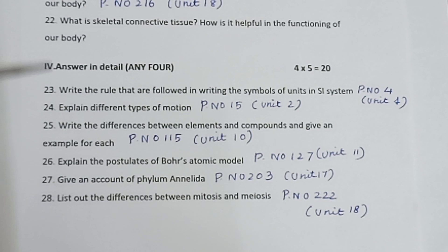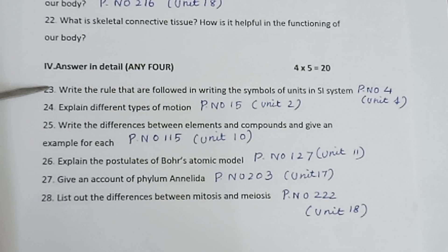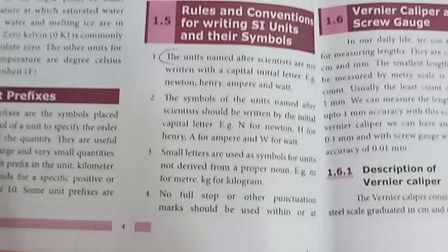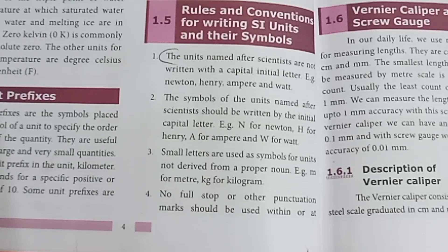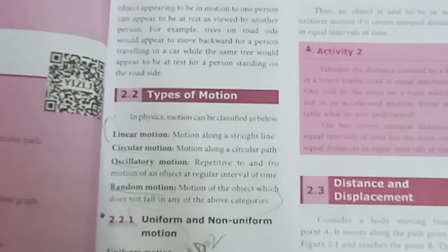Part 4: Answer in detail. Any 4. 4 into 5 is equal to 20. 6 questions total. These are easy questions, about 6 to 7 points each.